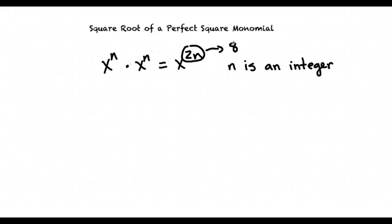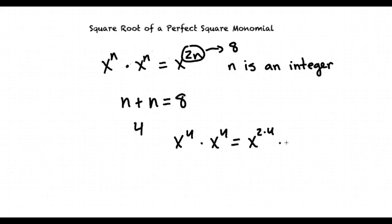And so we want n plus n to equal 8, since when we multiply exponents together, we add the actual exponents together to get our resulting one. The n that satisfies this is 4. So we're going to have x to the 4th times x to the 4th is going to be equal to x to the 8th power. Because of this, x to the 8th is a perfect square.